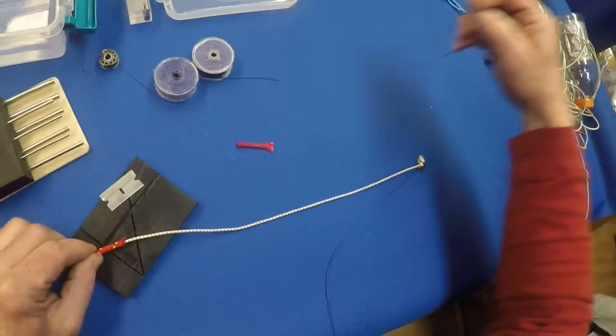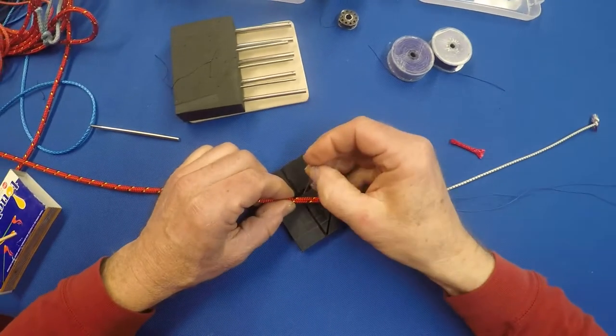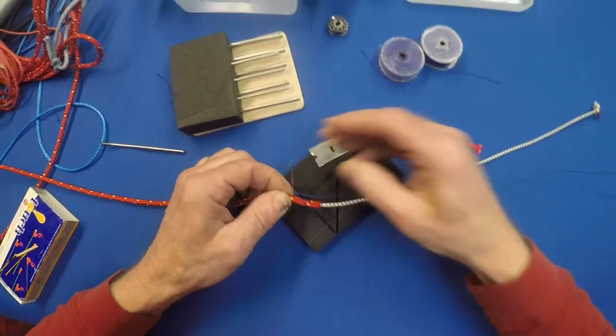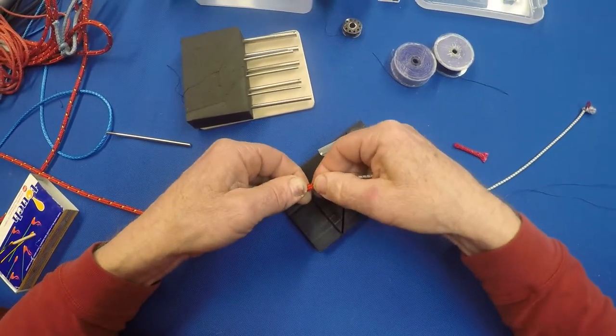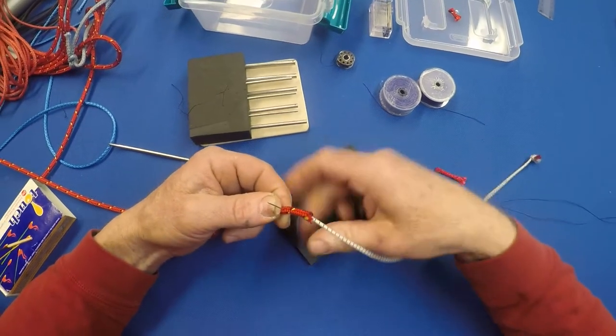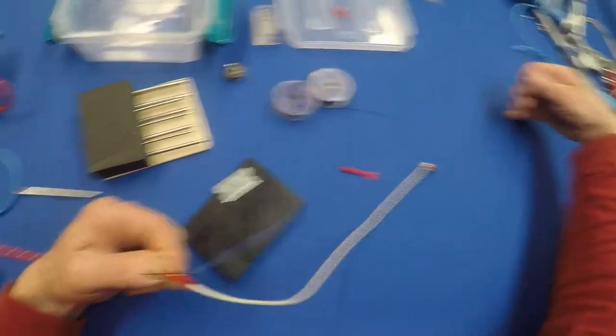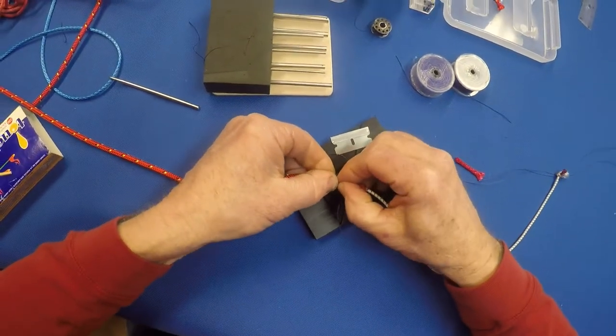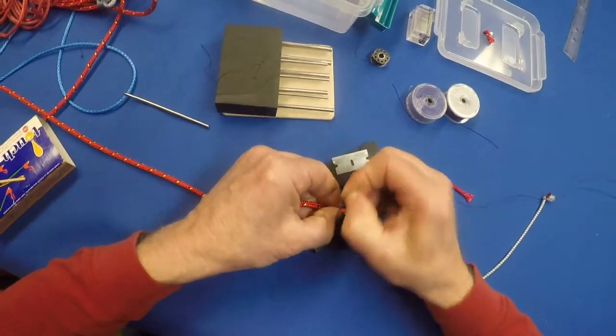Now I'm going to take some whipping twine and a needle here and just run a few stitches, four or five stitches, right through the bungee here, through the cover and through the bungee. This goes through the bungee kind of hard, so I just flip this upside down like this and then push that needle through using the cutting board. The plastic on the cutting board just to help push it through there.